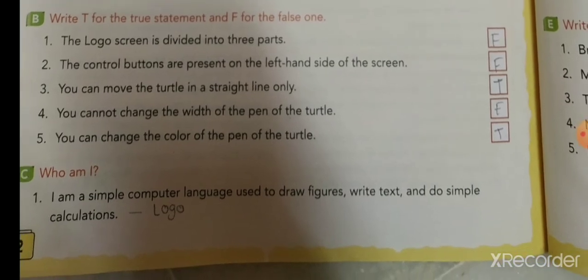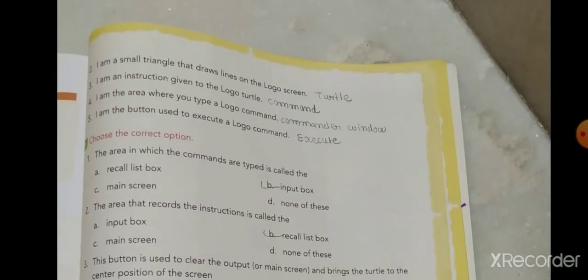Now Who Am I — First: I am a simple computer language used to draw figures, write text, and do simple calculations. Answer: Logo. Second: I am a small triangle that draws lines on the Logo screen. Answer: Turtle.